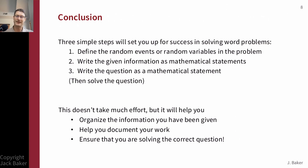To conclude, this three-step process really sets you up for success in solving word problems or general problems where you're given verbal information and need to do a calculation. Use those three steps: find the random events, write down your information, and write down your question as a mathematical statement — then proceed to solve. This approach also gives you nice documentation of how you went about solving the problem, and most importantly, it makes sure you're solving the correct question rather than just plugging numbers into formulas and potentially solving the wrong problem. I hope that's a helpful strategy, and I wish you luck with your probability problems.